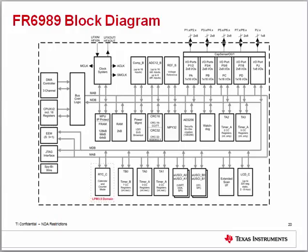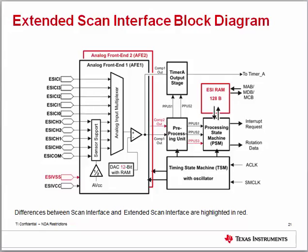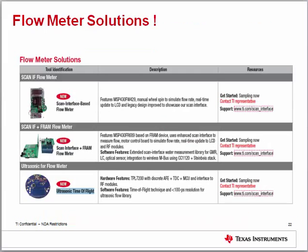This slide gives a more detailed look at the block diagram showing all modules and peripherals available on the MSP430FR6989. The extended scan interface module enhances the overall value proposition within the water meter application. Note that there are two AFEs in this new device and an enhanced RAM of 128 bytes. TI has multiple designs for flow meter applications available on the website — searchable on the smart grid web page under flow meter applications.